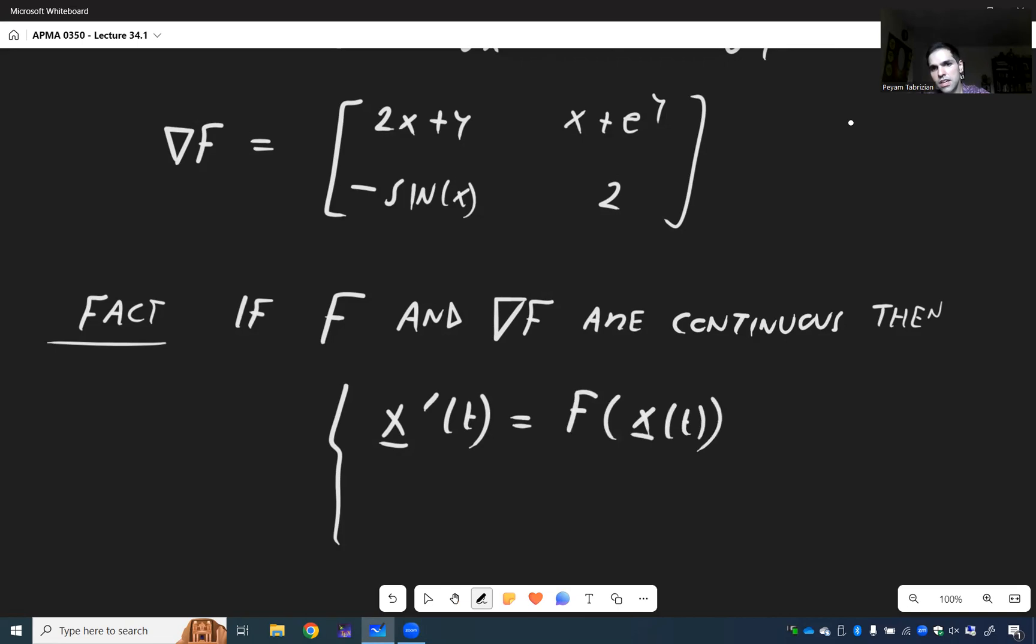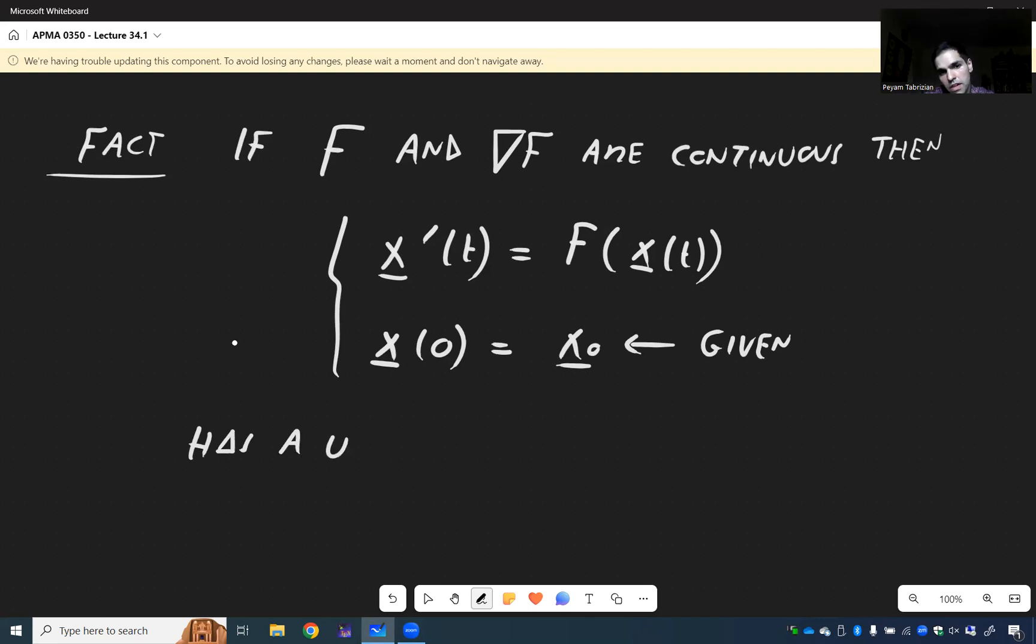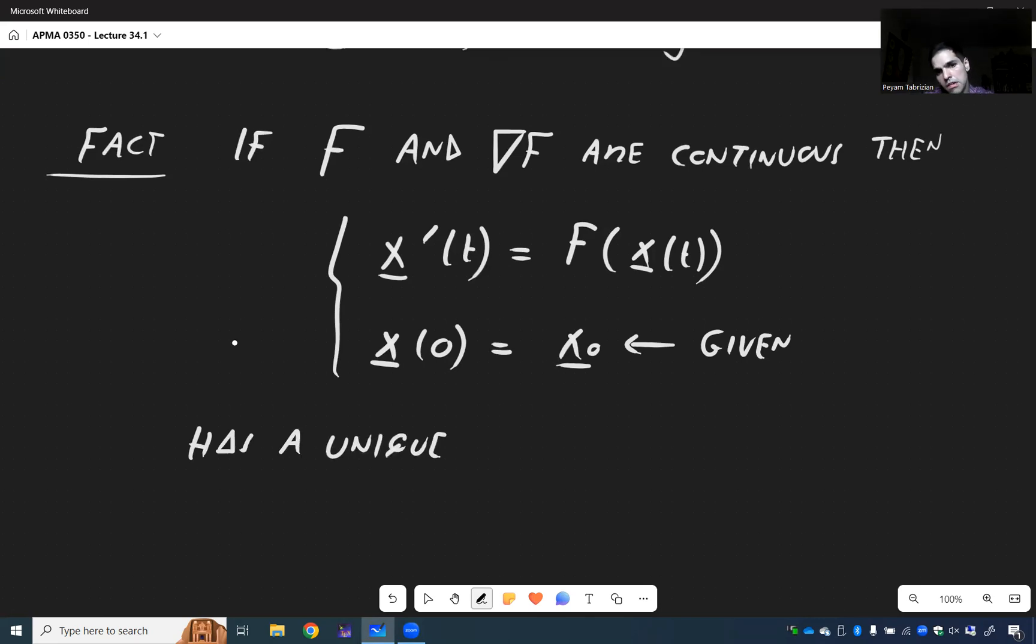Then our ODE x prime of t equals f of x of t with some given initial condition—so x at 0 equals x0, this is given—has a unique solution x of t for t close to 0.